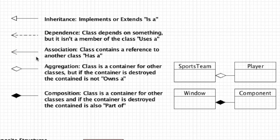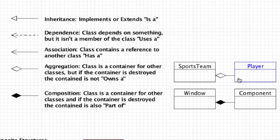Association relationships are situations where a class contains a reference to another class or class object. Going back to our previous example, this would be the situation where a dog has a specific breed — it has a breed. This is an association relationship: a reference to another object is contained inside our object, and we would use that arrow. Then we have aggregation, which is one of the things people have gotten confused about. Aggregations are situations where a class is a container for other classes, but if the container is destroyed the contained object is not. The example would be a sports team: even if the sports team is destroyed, that does not mean the player would be destroyed.